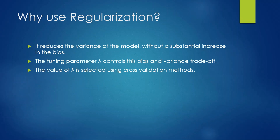So why do we use regularization? It reduces the variance of the model without a substantial increase in the bias. Variance describes how much a random variable differs from its expected value, whereas bias is the difference between the predicted and the expected value. Regularization makes the variance less without making a substantial increase in bias. The tuning parameter lambda controls the bias-variance trade-off, which is the situation where there is sufficiently less bias and variance — the best situation a model wants to be in. The value of lambda is selected using cross-validation methods.